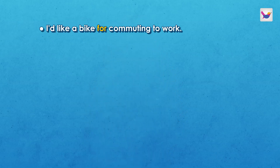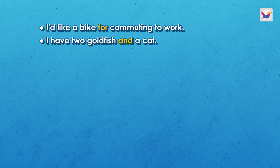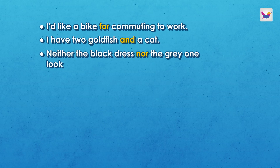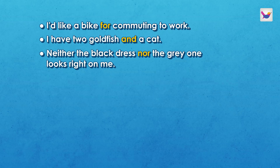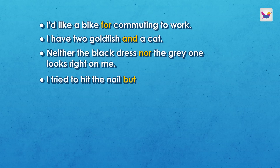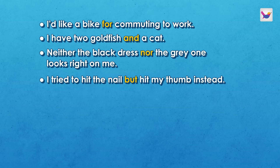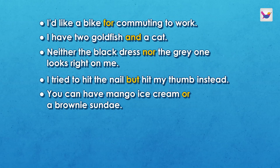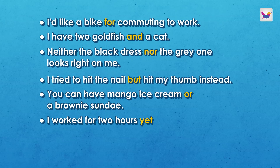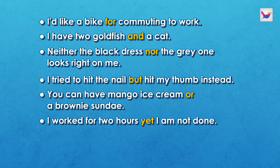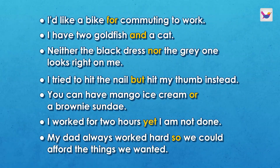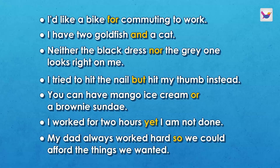Let's see more examples of conjunction: 'I would like a bike for commuting to work.' 'I have two goldfish and a cat.' 'Neither the black dress nor the grey one looks right on me.' 'I tried to hit the nail but hit my thumb instead.' 'You can have a mango ice cream or a brownie sundae.' 'I worked for two hours yet I'm not done.' 'My dad always worked hard so we could afford the things we wanted.'